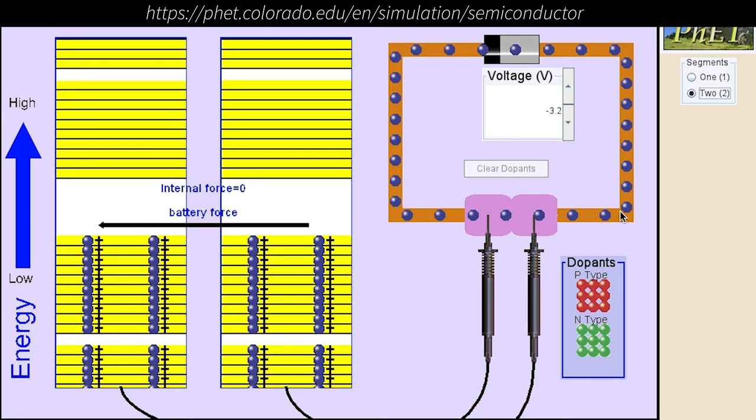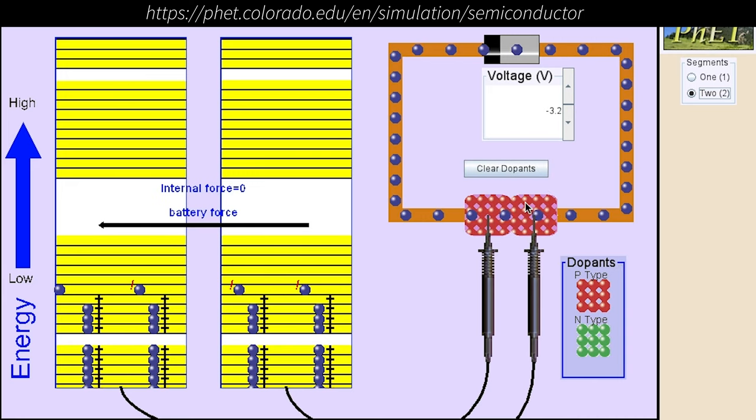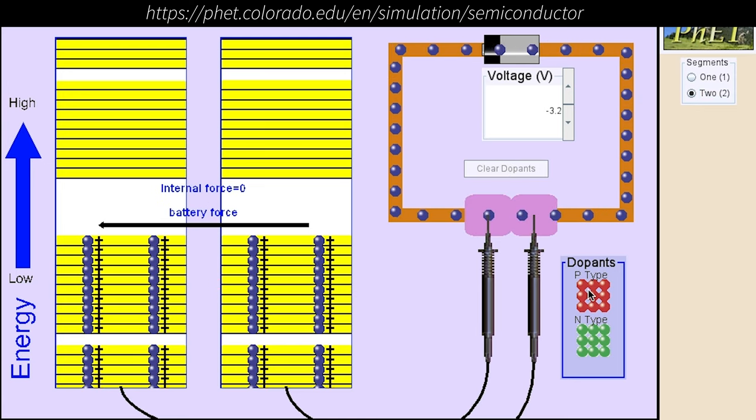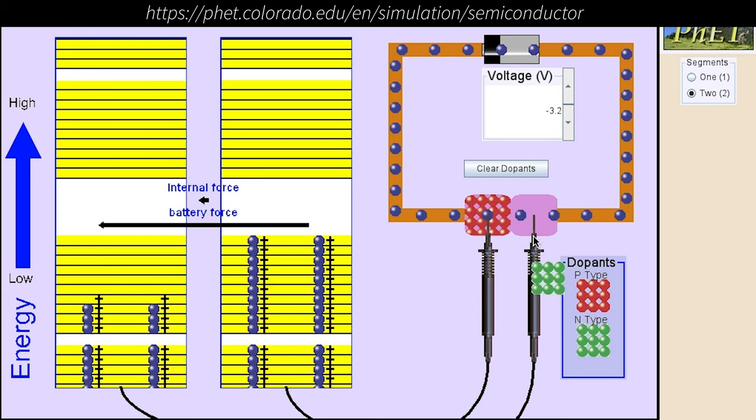Now, what happens when I take two such semiconductor materials and place them together? Well, if it's the same dopant, it looks just like before. The electrons move around in response to the applied current. But if I take one P and one N type, I have a diode. And this is how diodes work.